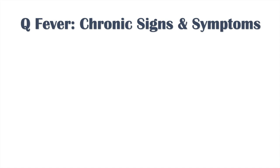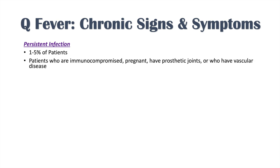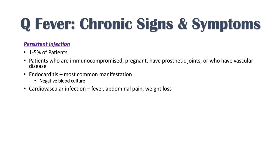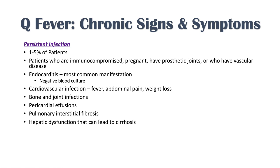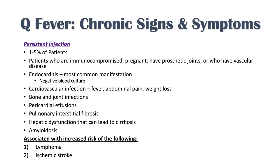There are also chronic signs and symptoms. Persistent Q fever infection occurs in 1% to 5% of patients — generally those who are immunocompromised, pregnant, have prosthetic joints, or have vascular disease. Endocarditis is the most common manifestation of chronic Q fever, and blood cultures are typically negative (culture-negative endocarditis). Other chronic manifestations include bone and joint infections, pericardial effusions, pulmonary interstitial fibrosis, hepatic dysfunction that can lead to cirrhosis, increased risk of amyloidosis, lymphoma, and ischemic stroke due to underlying inflammatory processes.